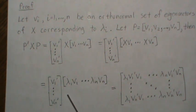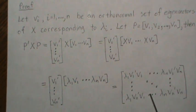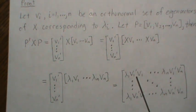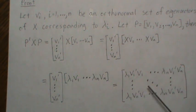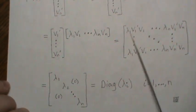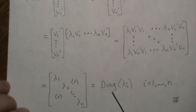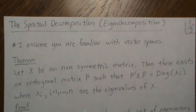When we multiply this out, taking each row and column combination, we get the resulting matrix. Because these are orthonormal eigenvectors, when a vector is dotted with itself the result is one, and when dotted with any other vector the result is zero. So all off-diagonal elements go to zero, and we're left with just the eigenvalues down the diagonal — represented as diag(lambda_i) for i equals one to n. That's the proof of the spectral decomposition theorem.